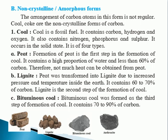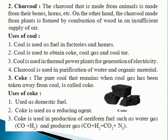Anthracite contains 90% of carbon. The charcoal that is made from animals is made from their bones and similar materials. On the other hand, the charcoal made from plants is formed by combustion of wood in an insufficient supply of air. This is how charcoal is prepared.